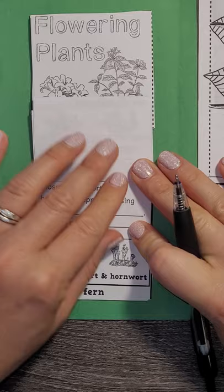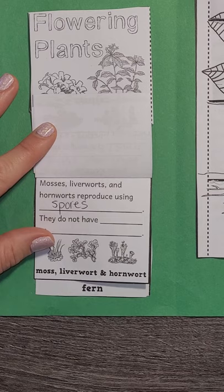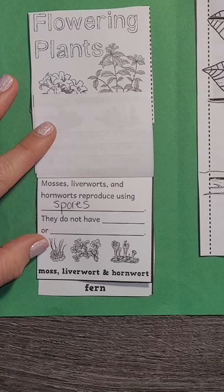Now, how do these plants reproduce? Remember, they're just like a fern — they use spores to reproduce. Very similar to a fern, they release their spores into the air.